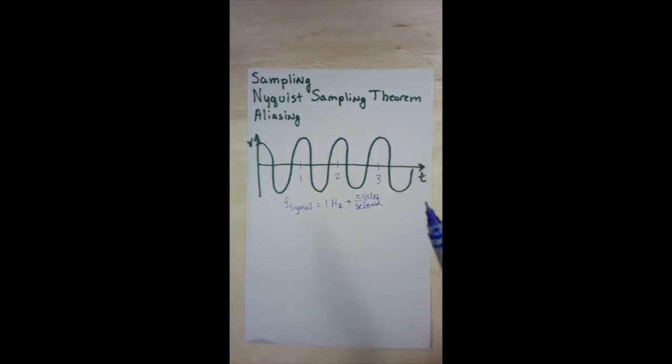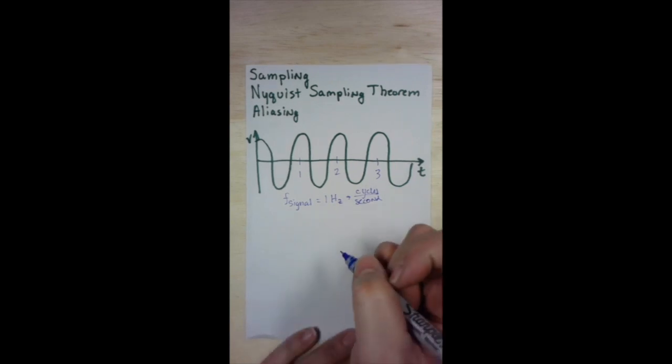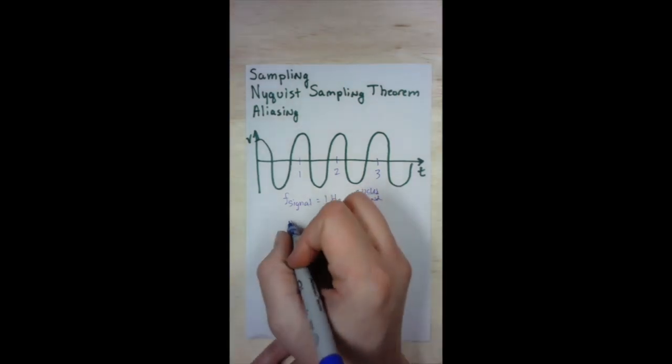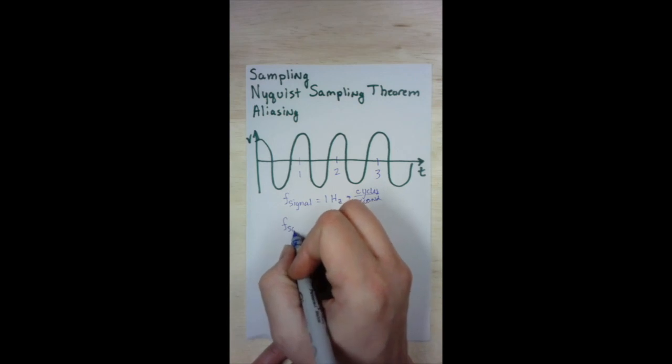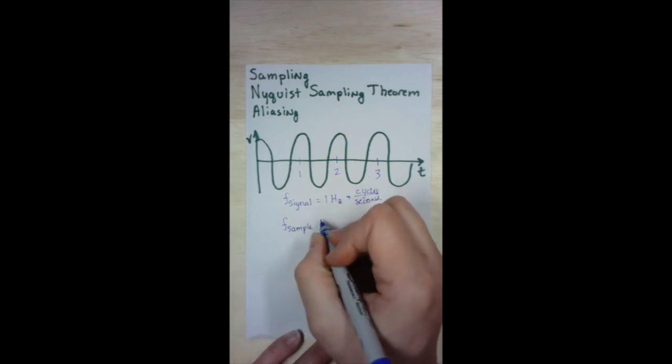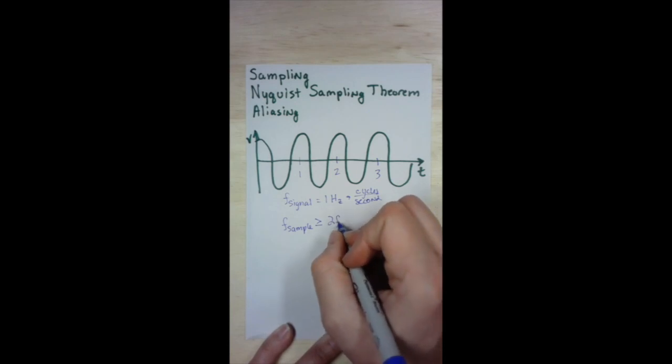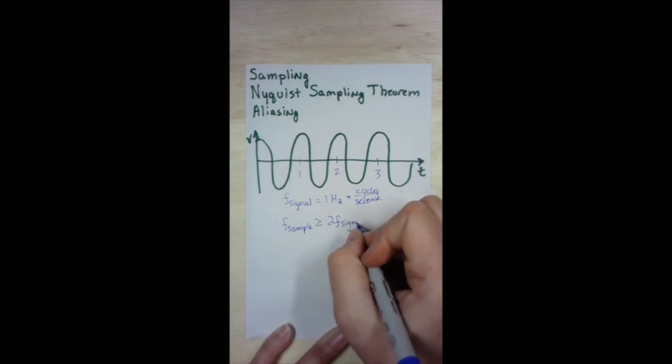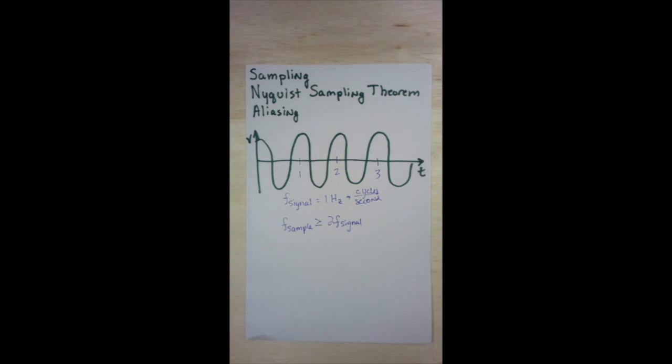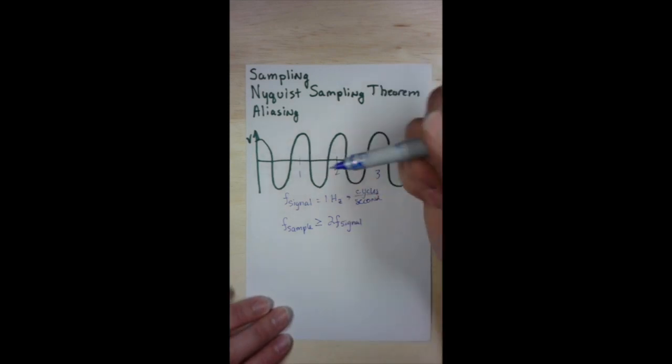Now comes the Nyquist sampling theorem. The Nyquist sampling theorem says the frequency of your sample must be greater than or equal to 2 times the frequency of your signal. All right. Let's see what that looks like.